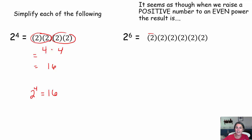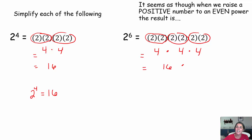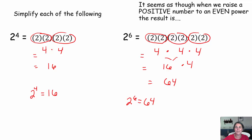Let's look at these pairings: 2 times 2 is 4, 2 times 2 is 4, 2 times 2 is 4. Again, all we have is positives running around. Four times 4 is 16, times 4 is 64. So 2 to the sixth power is 64. If you have a positive base, whether or not you're dealing with an odd exponent or an even exponent, your answer will be positive.